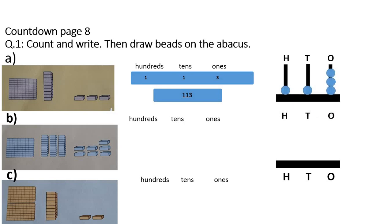Students, this is the abacus. You will see the beads — how many hundreds: 1. So you will draw 1 bead in the hundreds. In tens, you will draw 1 bead. In ones, how many beads will you draw? 3 beads. So, 113.